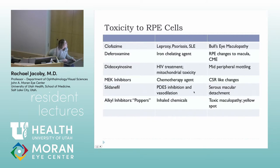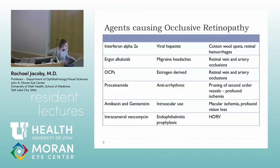Sildenafil can also cause subretinal fluid, felt to be due to vasodilation causing extravasation of fluid under the macula. Alkyl nitrite inhalants — called 'poppers' — which induce euphoria, can cause a little yellow spot in the central macula.